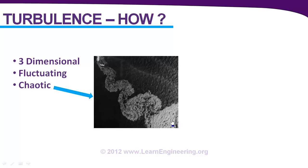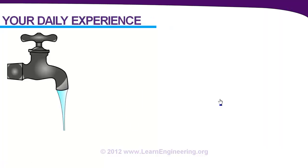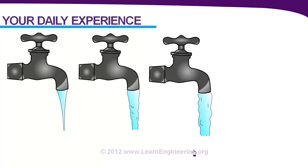We will understand the nature of turbulence by examining a simple daily life problem: a simple tap water problem. In each case you increase the flow rate. In the first case where flow rate was minimum, the flow is laminar in nature — there is no fluctuation, no chaos. In the other two cases you can see effective turbulence increases; the flow becomes more chaotic and unsteady or fluctuating in nature.